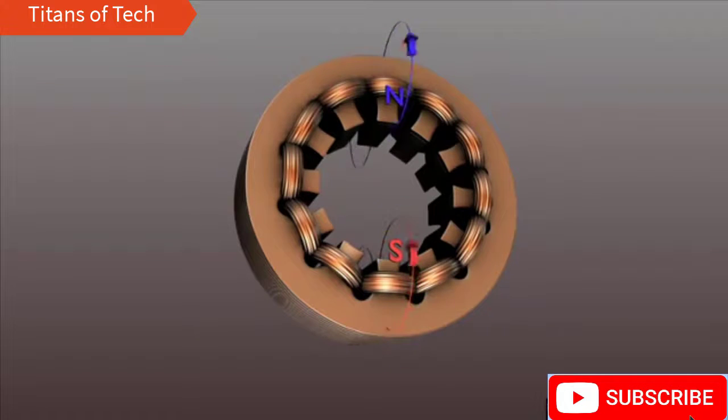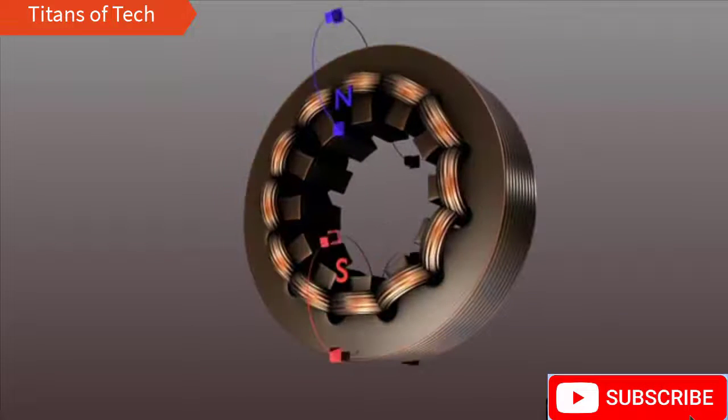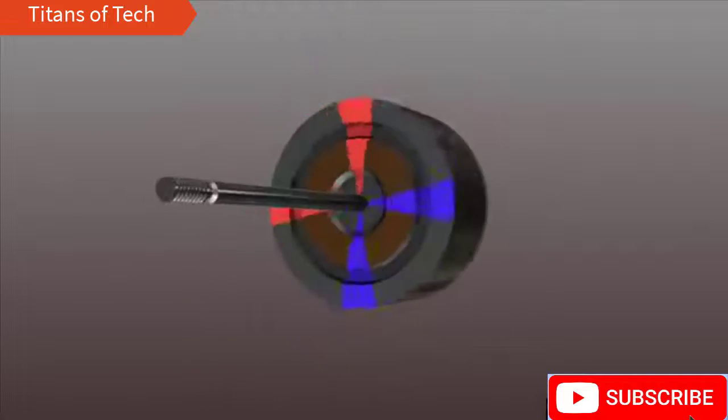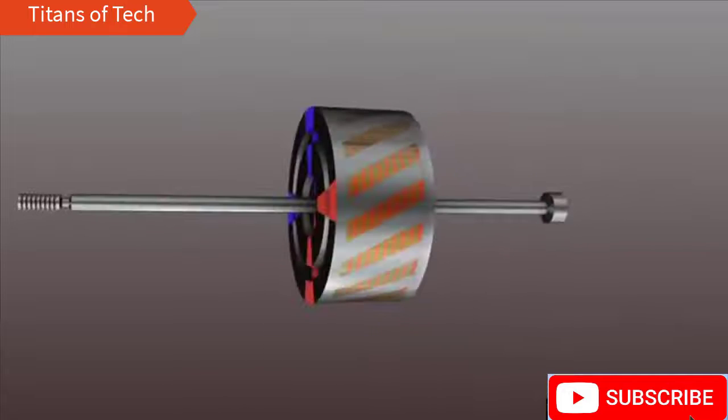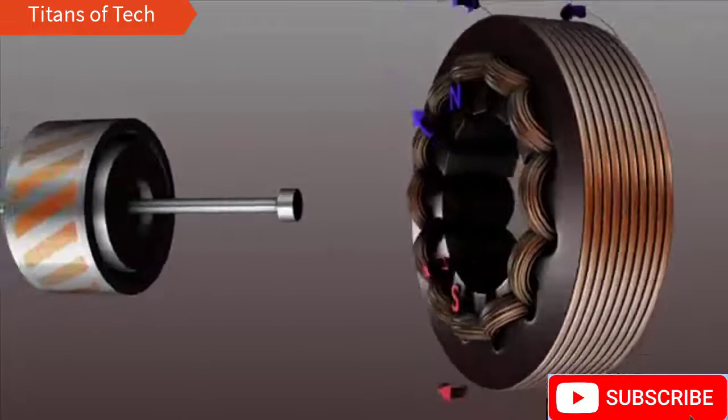The rotor is the rotating electrical component. It also consists of a group of electromagnets arranged around a cylinder with the poles facing toward the stator poles. The rotor is located inside the stator.